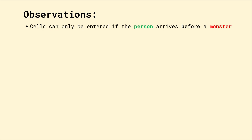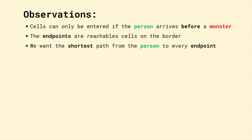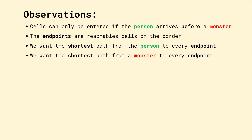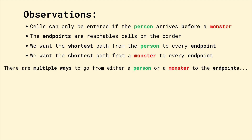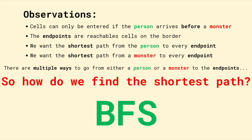Let's take a look at some observations we can make. Cells can only be entered if the person arrives before a monster. We have fixed endpoints, which are reachable cells on the border. To see if a person can reach an exit, we want to see if the person can reach it in the shortest path possible. However, if a monster can reach it in a shorter path, then that cell is not reachable. We have multiple ways to go from either a person or a monster to the endpoints, so to find the shortest path we can use BFS.